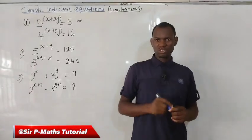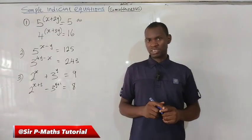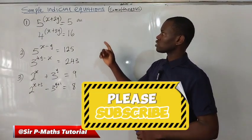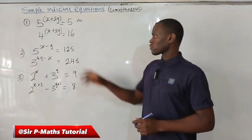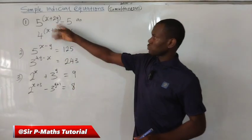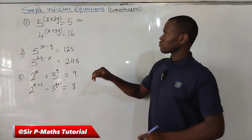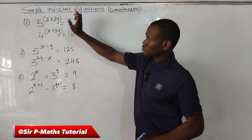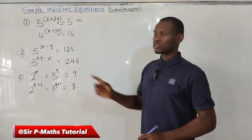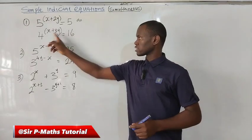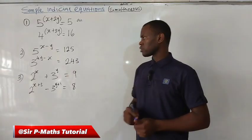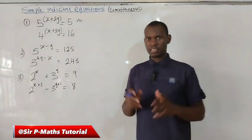Hello friends, you are welcome back again to Sapima Tutorial. In our lesson today we shall be considering simultaneous linear equations involving indices. If you observe these equations, they are exponential indices and we are given two equations, expected to solve at the same time, looking for two different variables x and y. How do we approach such a problem? We are going to consider it in this lesson.